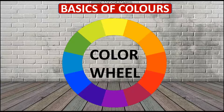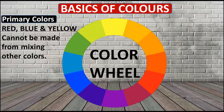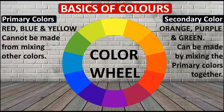I will explain how to read the color wheel and how to make combinations with it. Primary colors are made without any color mixing — they are red, blue, and yellow. Secondary colors are made from primary color mixtures: red and yellow make orange, blue and yellow make green, and red and blue make purple.